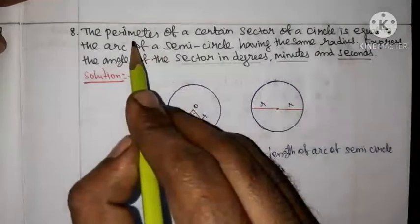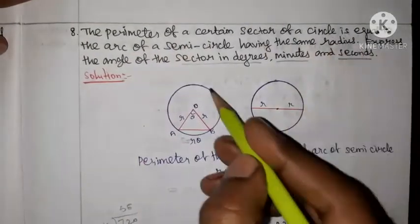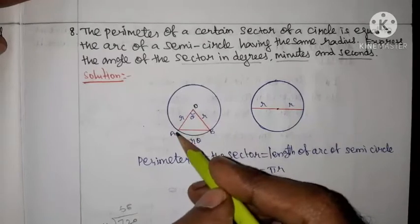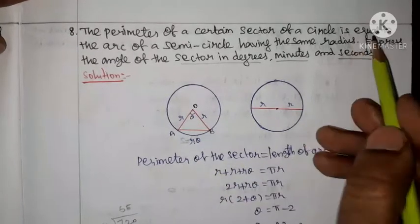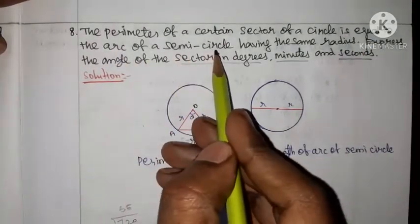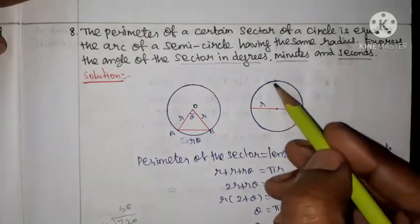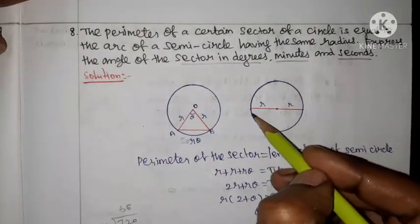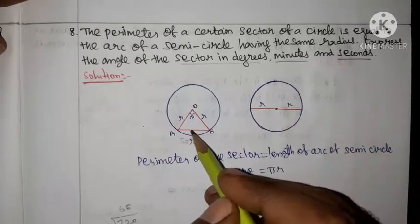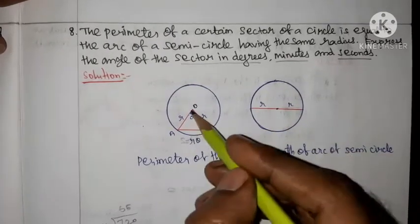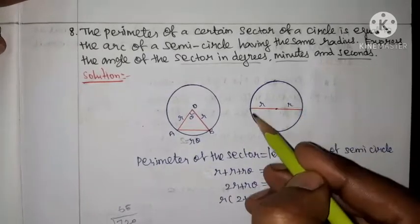So, this is a perimeter of a certain sector of a circle — a circle with a sector split out. It is equal to the arc of a semicircle having the same radius. So this semicircle is equal to the sector, and the semicircle has the same radius.